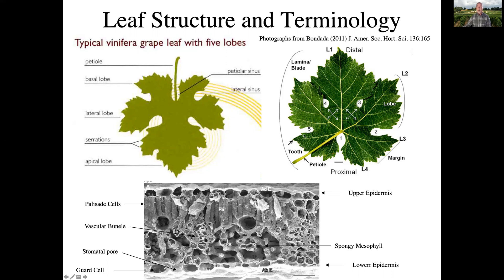The leaf venation is also quite striking. You can see that these veins go quite a ways all throughout the leaf and ultimately close to all the plant cells.